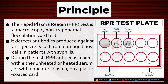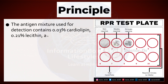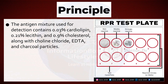During the test, RPR antigen is mixed with either unheated or heated serum, or with unheated plasma, on a plastic-coated card. The antigen mixture used for detection contains 0.03% cardiolipin, 0.21% lecithin, and 0.9% cholesterol, along with choline chloride, EDTA, and charcoal particles.